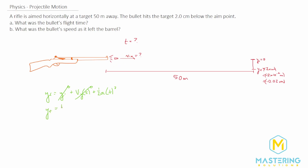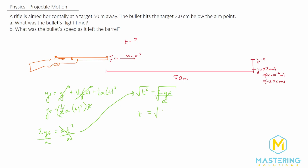So y final equals one-half the acceleration times time squared. We multiply both sides by two, giving us two times y final equals acceleration times time squared. Then we divide both sides by acceleration, so time squared equals two times y final divided by acceleration. Taking the square root of both sides, time equals the square root of two times y final divided by acceleration.